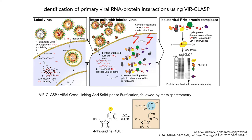We then lyse the cells under highly stringent protein denaturing conditions. We quantitatively capture total RNA from the lysates, regardless of whether it is cellular or viral. In so doing, we are able to recover only proteins that remain cross-linked to the captured RNA, which in our case can only be from the 4-thiouridine labeled viral RNA.